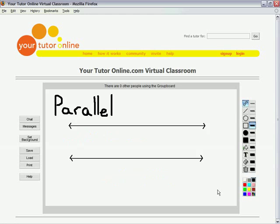First, we need some definitions. Parallel lines are two lines which will never intersect or touch. They have the same slope.